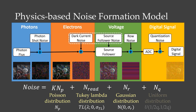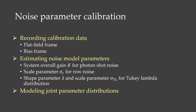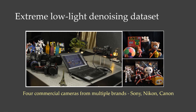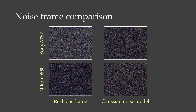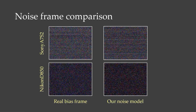The row noise is depicted by a Gaussian distribution, and the quantization noise is denoted by a uniform distribution. Our noise model requires several parameters to be specified. We use statistical tools to estimate noise model parameters and then model the joint parameter distributions. We also capture an extreme low-light denoising dataset to verify the generality of our noise model. We visualize the real and the synthetic noise frames of different cameras. Compared to the Gaussian noise model, our synthetic noise frames are more realistic and close to the real noise frames.